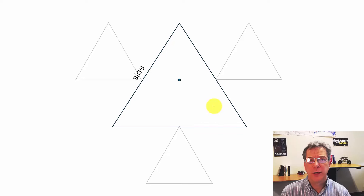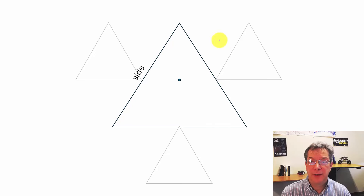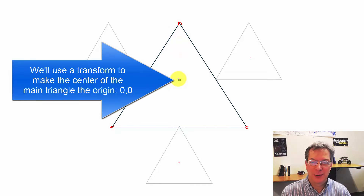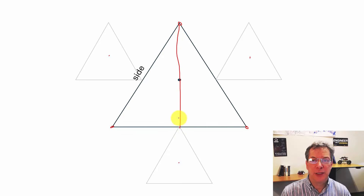Here we have one iteration of our recursive function — the main triangle and then the three smaller ones around it. Our triangle function is going to be given the center of the triangle and the length of a side, and from that we need to figure out where our points are: where we draw the vertices of our main triangle, and where the centers of the three secondary triangles are. The x-coordinate of the top point is zero — the same as the center — so we offset by zero. The y value gets trickier because it looks like it might be half the side, but that isn't true.